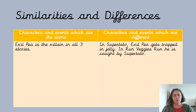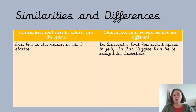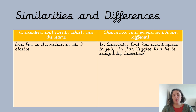I've put one example — I'm sure you can think of loads more than I have. I put that the evil P is the villain in all three stories — the evil P is in each book and is always causing trouble, so I've just put 'the villain in all three.' Then for differences, in Supertato, the first story we read, the evil P gets trapped in the jelly. This doesn't happen in Run Veggies Run — in Run Veggies Run he's just caught by Supertato and marched back to the freezer, so I've put 'he's just caught' — you could say there is no jelly. Maybe something different happens in Evil P Rules, but I'm going to leave that to you to work out!